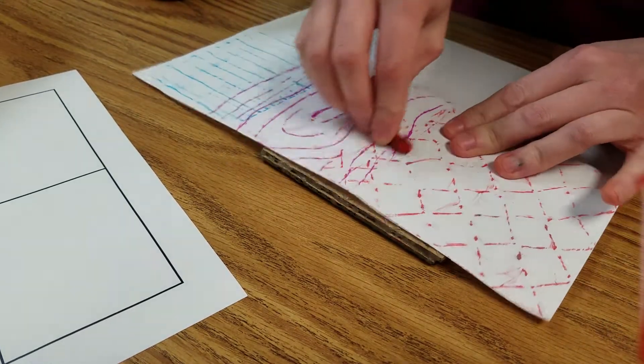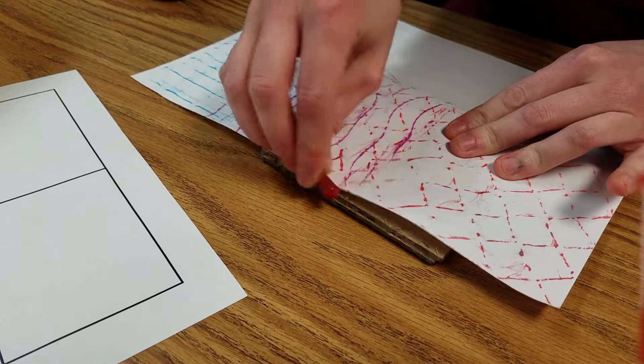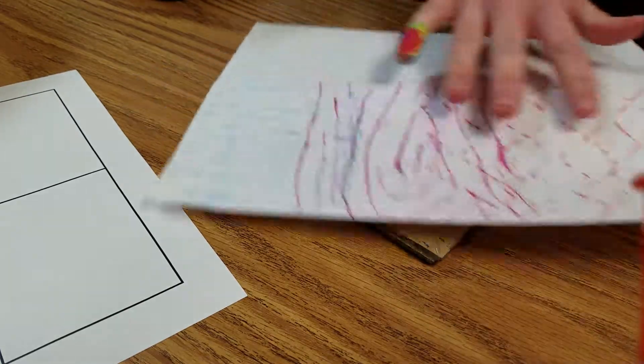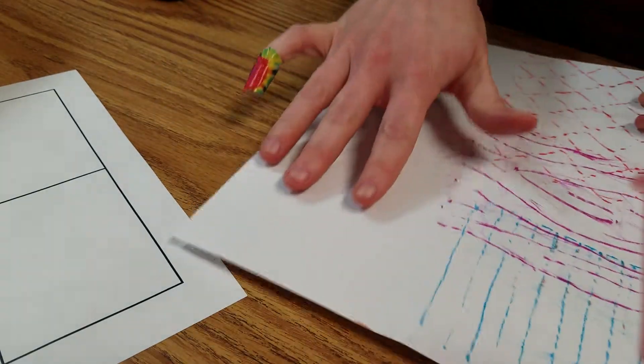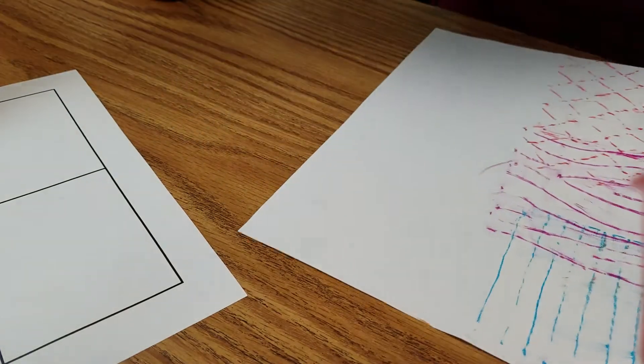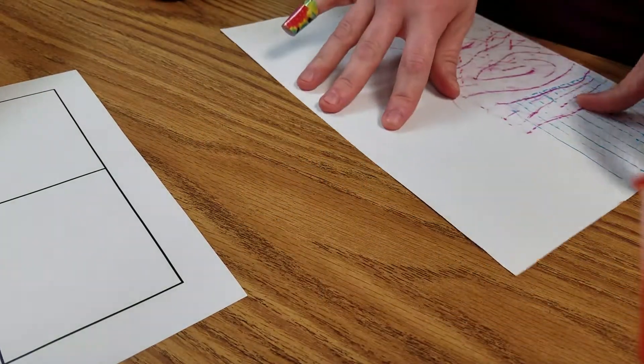You can layer it a little bit if you want to. I think that looks interesting when you do that. And you're going to fill your entire paper. This side here as well. You get another texture and do that.